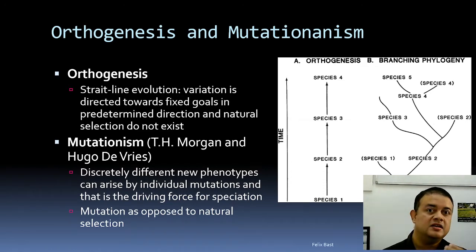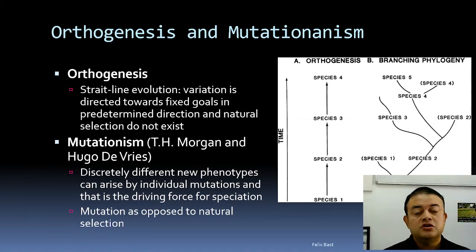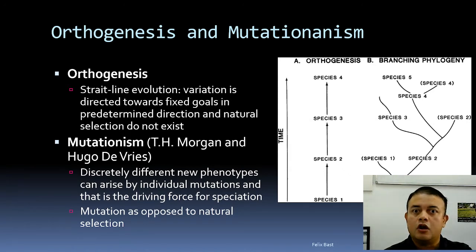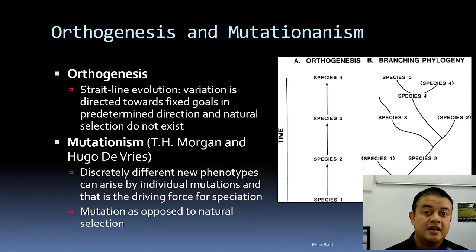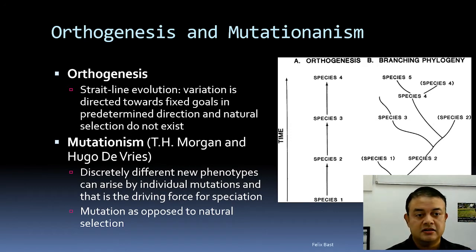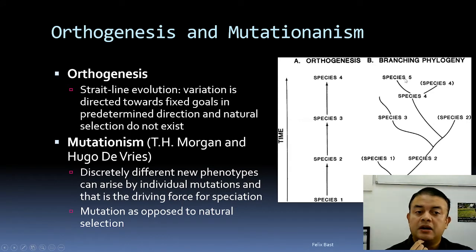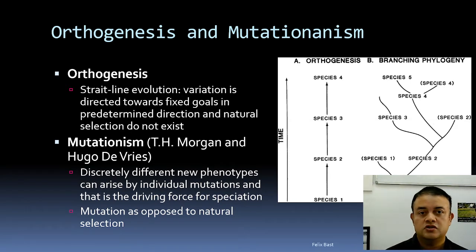Orthogenesis is a teleological concept — it is deterministic and predictable. But evolution is not teleological; the end goal is not seen in advance. Evolution is a completely random process. If you turned back time and ran it again, you might get a different outcome. Currently we see certain species while others are extinct, but chance plays a crucial role. So orthogenesis is teleological and wrong, and mutationism is not all-inclusive — it is only part of natural selection.